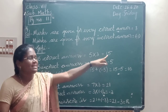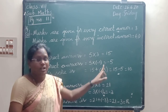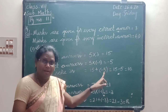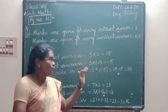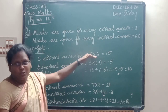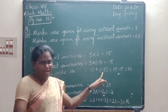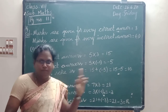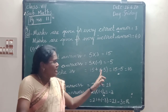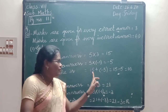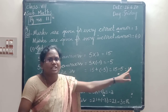Now Gopi's score. Correct answers score is 15. Incorrect answers score is minus 5. So Gopi's score is 15 plus minus 5. Plus into minus is minus. The product of a positive and negative integer is a negative integer. So 15 minus 5 equals 10.